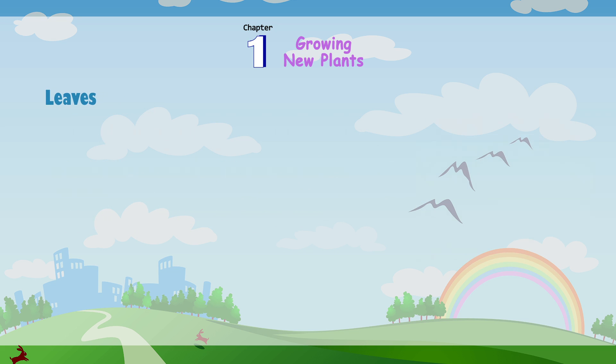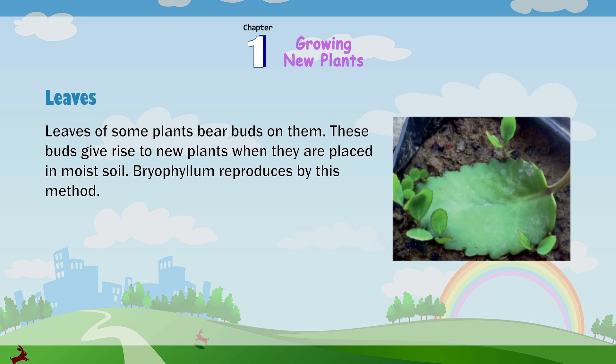Leaves: Leaves of some plants bear buds on them. These buds give rise to new plants when they are placed in moist soil. Bryophyllum reproduces by this method.